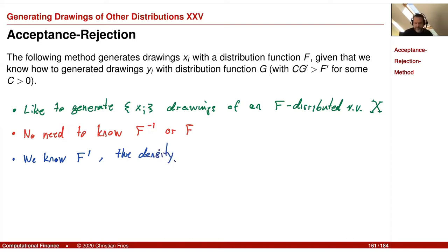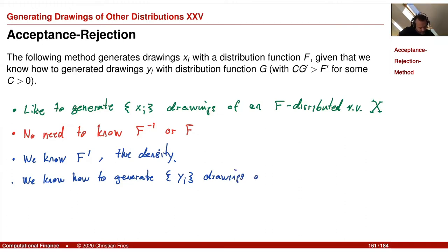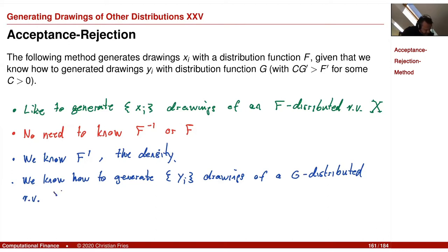Recall that this is the situation we had for the normal distribution. For the normal distribution, the density is 1 divided by square root of 2π times exponential of minus x squared over 2. So we know the density as a nice closed formula. We do not know f or f-inverse in closed form. But then we need some additional ingredients — we need to know how to generate some utility sequence, a sequence y_i, and these are drawings of a g-distributed random variable Y.